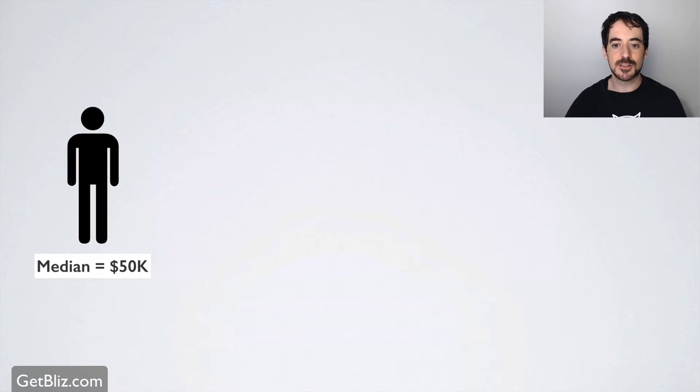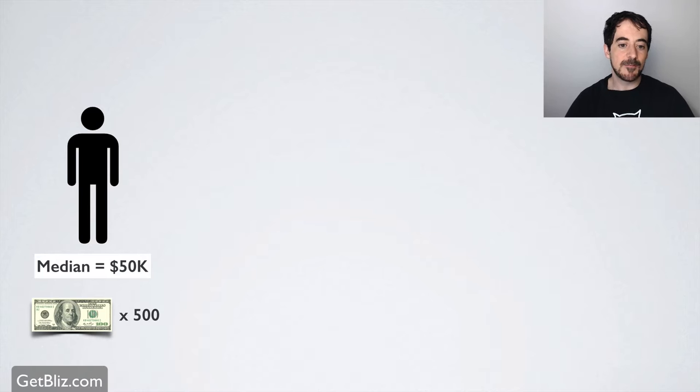So that means that 50% of Americans' net worth is 500 of those bills. 500 times 100 is $50,000. How does that look in the real world? It looks like this. If you were to lay out on the ground the total net worth of half of the Americans, at least 50% of the Americans have about that amount of money.